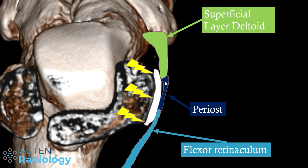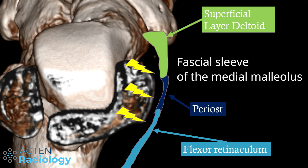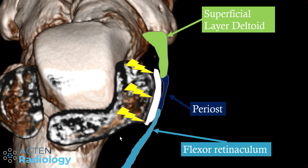Typically what you then see on MRI is some fluid in between this dark structure and the bone, basically below the periosteum. These three structures are in continuation, and this fibrous sheath has also been termed the fascial sleeve of the medial malleolus. If you have this kind of injury you can call it an avulsion or stripping of the fascial sleeve of the medial malleolus. Importantly, if we have this stripping and the posterior tibial tendon is nearby, we might actually have an instability of the posterior tibial tendon.